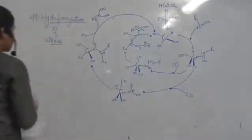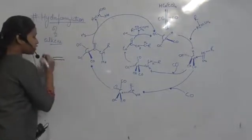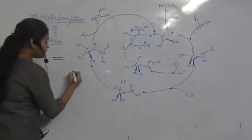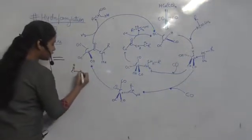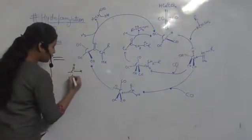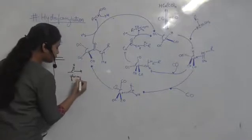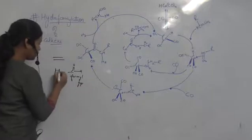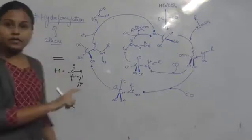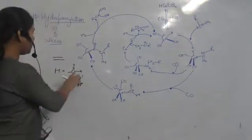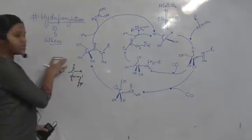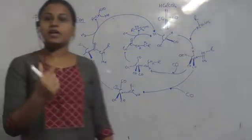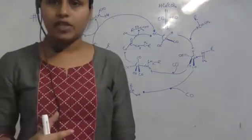There is an addition of hydrogen and a formyl group. What is the formyl group? C double bond O — this particular group is the formyl group. So whenever the hydrogen and this formyl group are added to an alkene so that the double bond is removed, this particular reaction is hydroformylation.